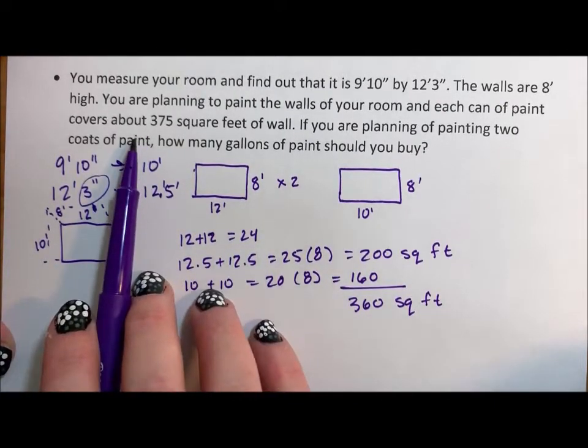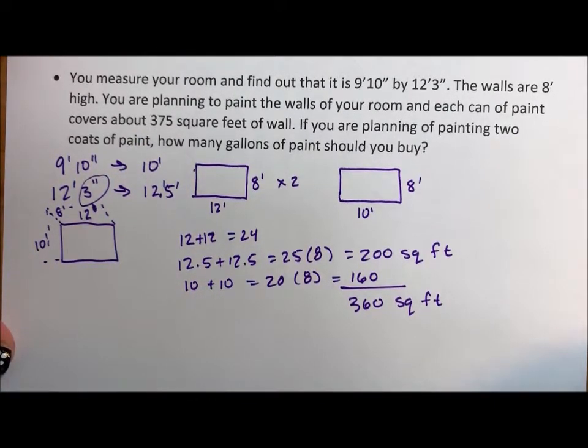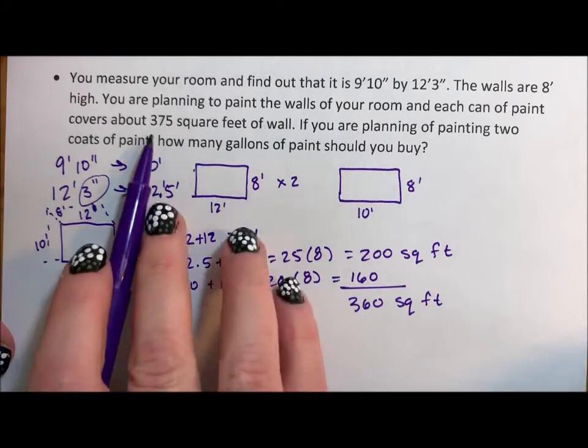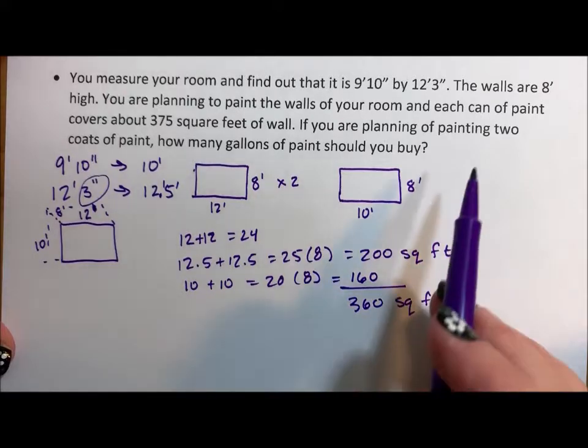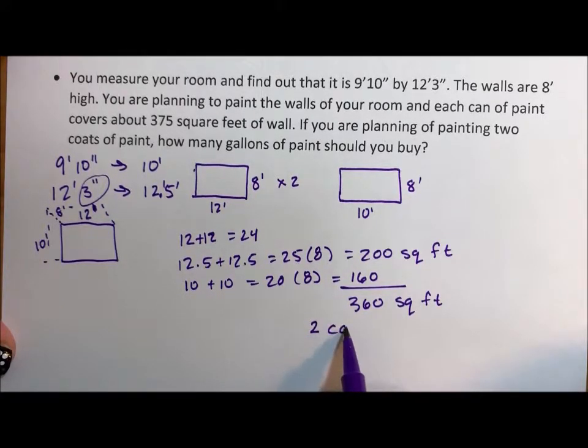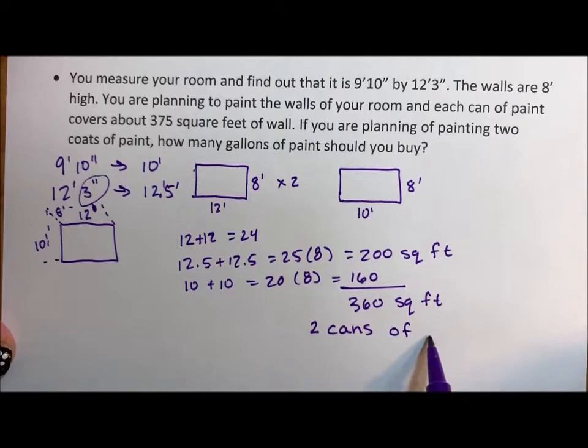It's 360 square feet. So it looks like one paint can should cover all of my walls, but I want to do two coats, so I should get two cans of paint.